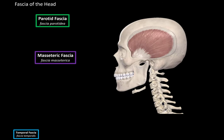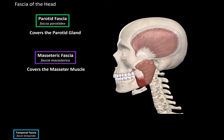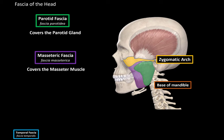Next, we have the parotid fascia and the masseteric fascia. We'll do these two together because the parotid fascia partially fuses with the masseteric fascia. The parotid fascia covers the parotid gland, which produces saliva. The masseteric fascia covers the masseter muscle. Anteriorly, the parotid fascia fuses with the masseteric fascia to form the parotideomasseteric fascia, and then it continues as the masseteric fascia. They both attach at the zygomatic arch and then go down to attach at the base of the mandible.